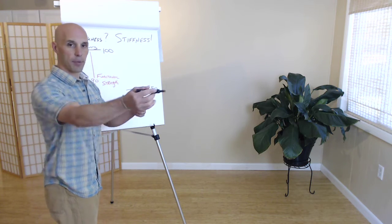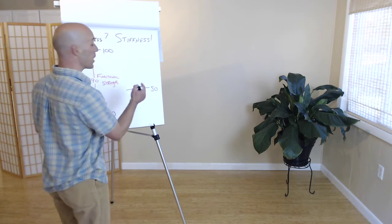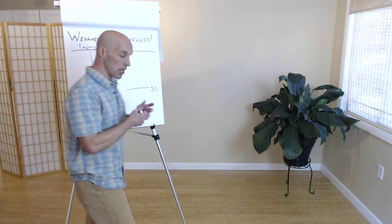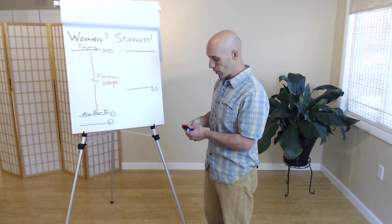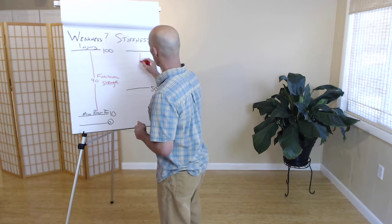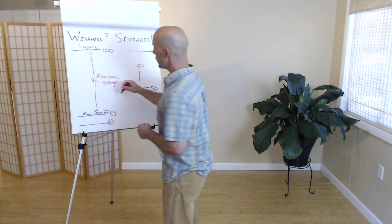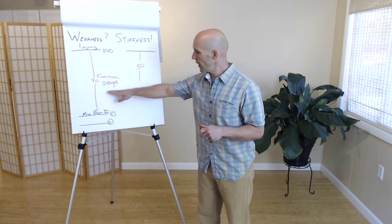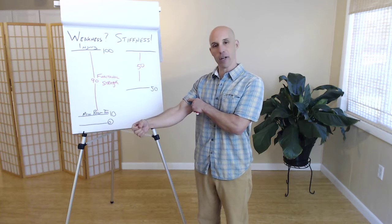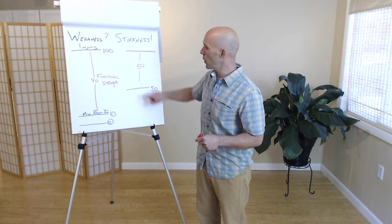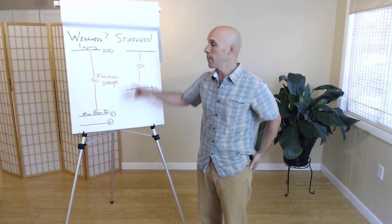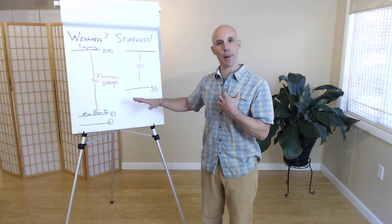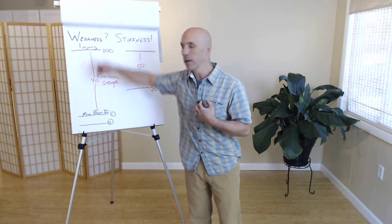That doesn't always happen all of a sudden — it can happen over time. But if our resting tension is now 50 and our breaking point is still 100, the breaking point doesn't change, but the resting tension comes up. Now we have a functional muscle strength difference of only 50. Instead of 90 units of force available to us, we only have 50. This elevation in minimal resting tension means we don't have as much functional strength available before we injure ourselves. The stiffer we are, the weaker we become.